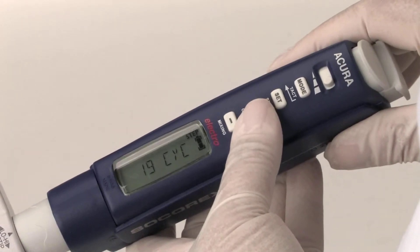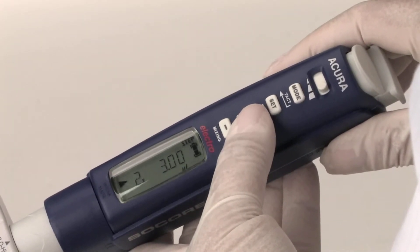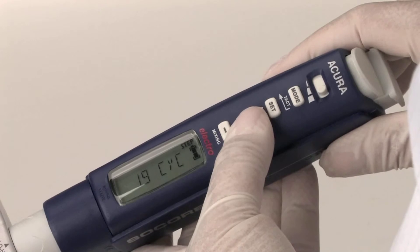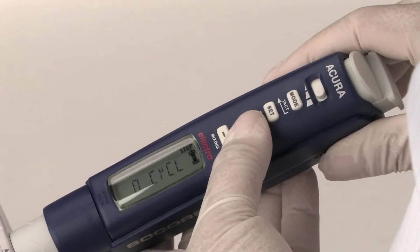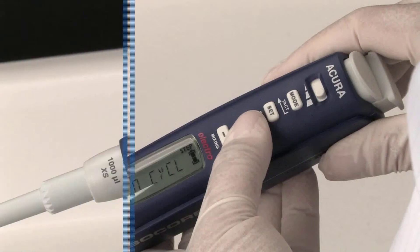The cycle counter displays the number of cycles performed since the counter unit was last reset to zero. Consecutive aspiration and dispensing are counted as one cycle. It enables maintenance and calibration tracking or may be used for any other purpose.